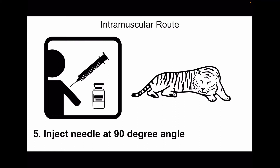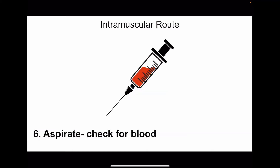The fifth step is to draw the drug from the vial or ampule and then inject the needle at a 90-degree angle to the muscle. Once you have pierced the needle, before injecting you need to aspirate and check whether blood is coming into the needle.